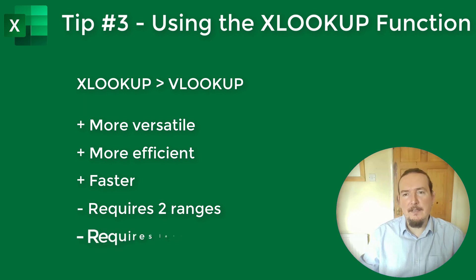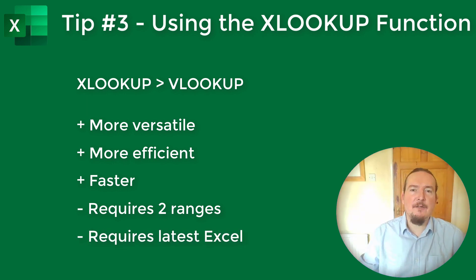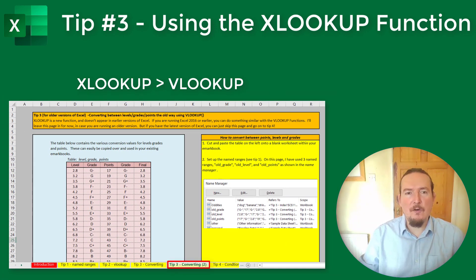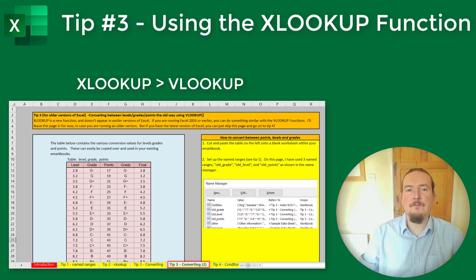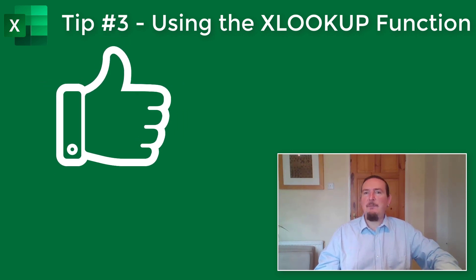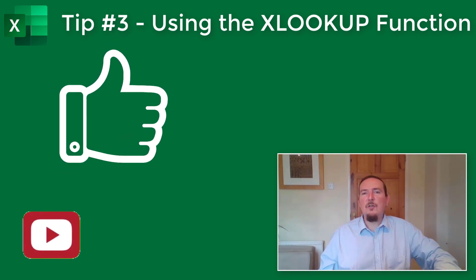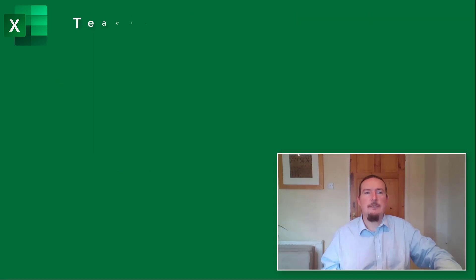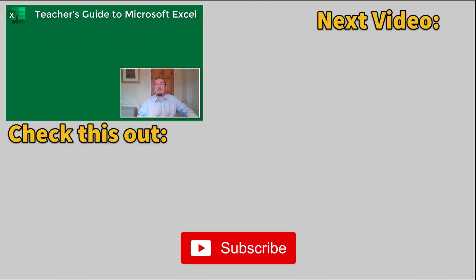XLOOKUP is only available in the latest version of Excel, and before it came out I used to do all these grade conversions using VLOOKUPs instead. I have left the older method in the workbook just in case some of you are running older versions of Excel. But if you can use XLOOKUP, just skip this page and go on to Tip 4: Conditional Formatting. If you like this video please do let me know by clicking the like button below, and why not subscribe — YouTube will then be a little more likely to recommend my videos to you in future. Click over here to start the next video in this Excel series, or click on the thumbnail below for the full series playlist.